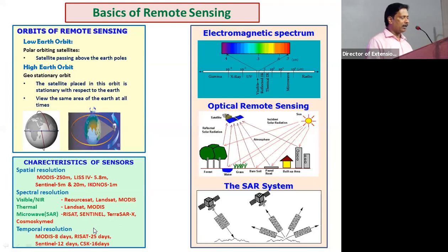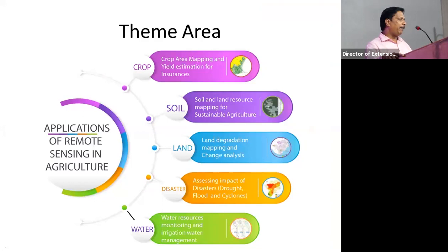That covers the basics of remote sensing. Microwave remote sensing is highly suitable for crop monitoring. The TNAU Department of Remote Sensing is a pioneer, handling different theme areas: crop monitoring, soil and land resources, disaster, and water.